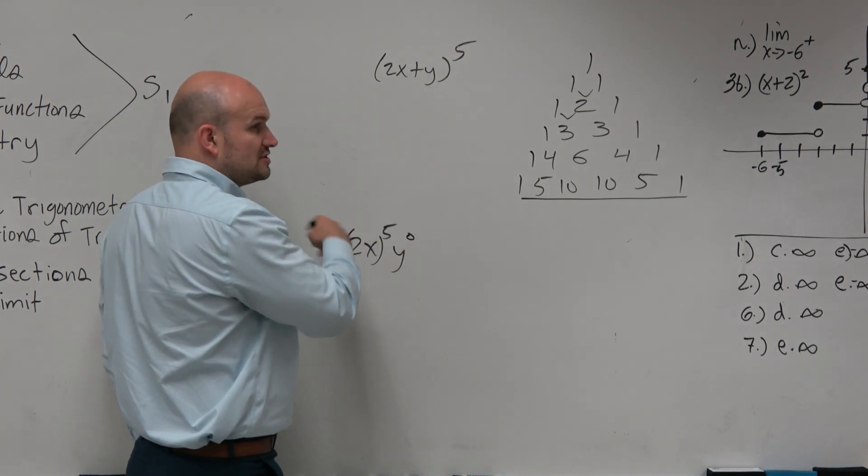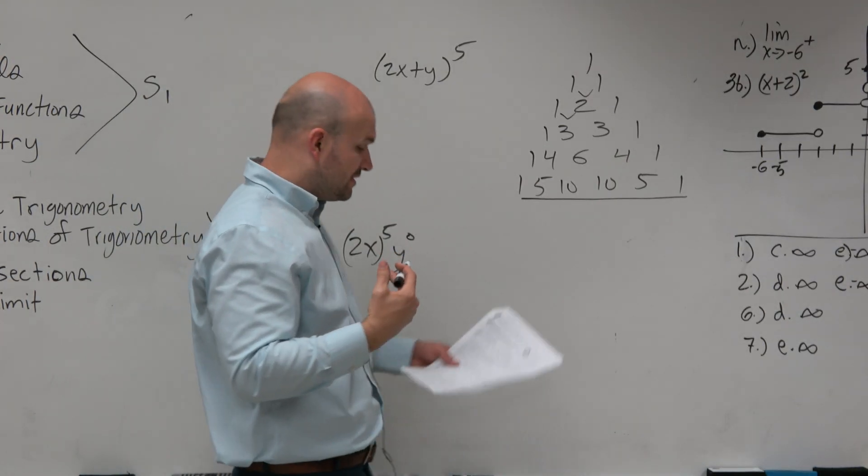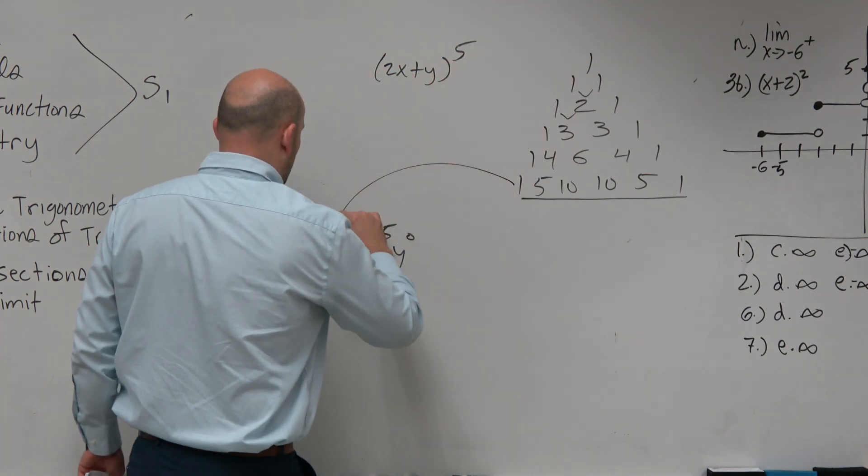And then the first term goes in descending order. Second term goes in ascending order. And again, the question is only asking us to get to the third term, right? But we've got to also take these as our coefficients.